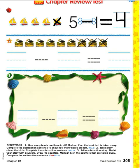Number two. Let's write a subtraction sentence for what's happening in this picture. To get us started, we need to see how many there were in the total group before the subtraction took place. To do that, we need to count the ones without x's and the ones with x's. Let's count to see how many were in the total group.